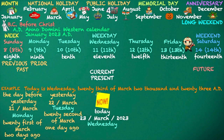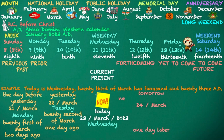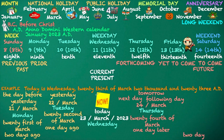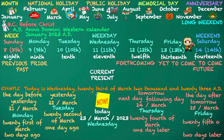Future. To come. Yet to come. Forthcoming. One day later — Tomorrow. Next day, following week. Two weeks later. Tuesday, 24th of March. Two days later — the day after tomorrow. Friday, 25th of March.